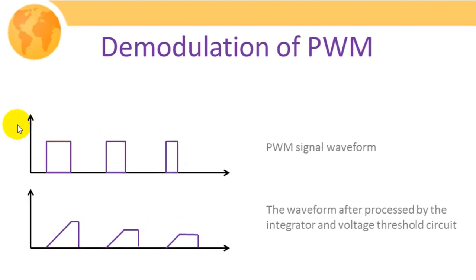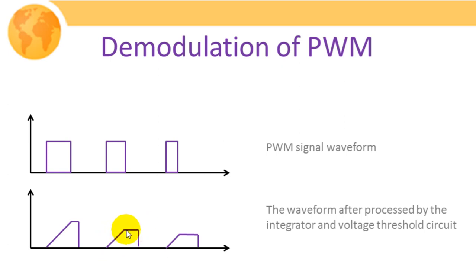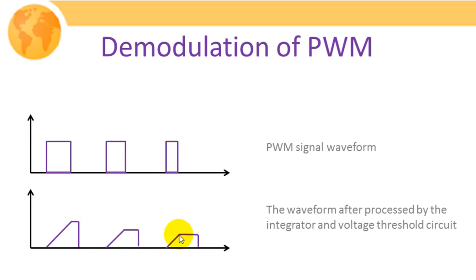The first waveform is the PWM input to the integrator. The integrator integrates the pulses, producing a ramp for the duration of each pulse. We maintain that ramp until the maximum time duration. All three pulses achieve three different ramp heights depending upon their width — a high-width pulse achieves a greater ramp height, and a low-width pulse achieves a lower ramp height.